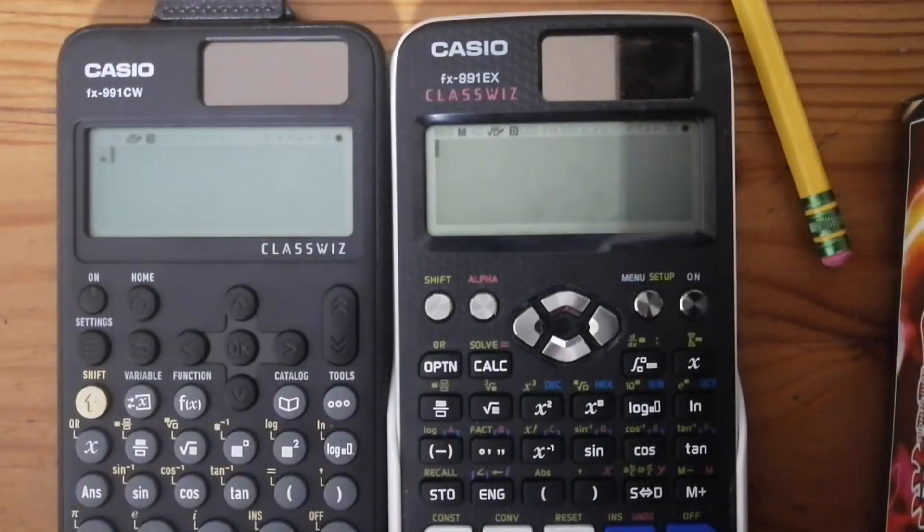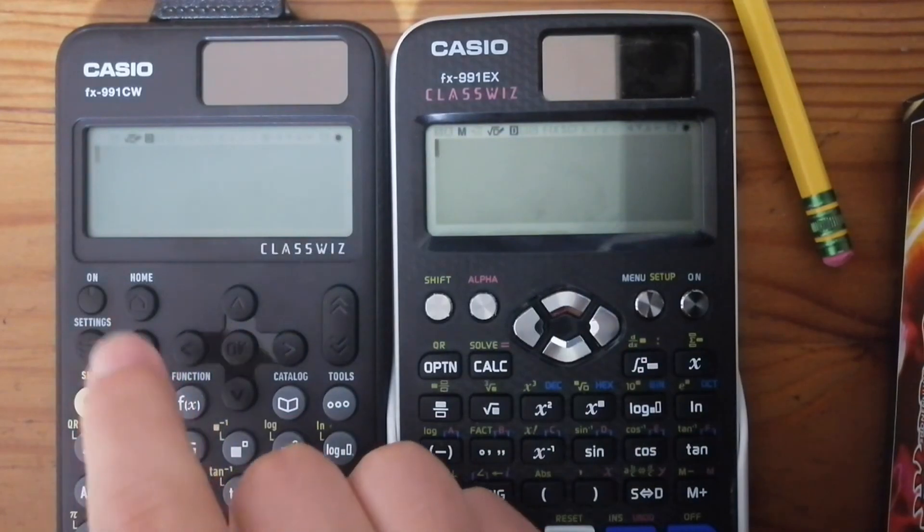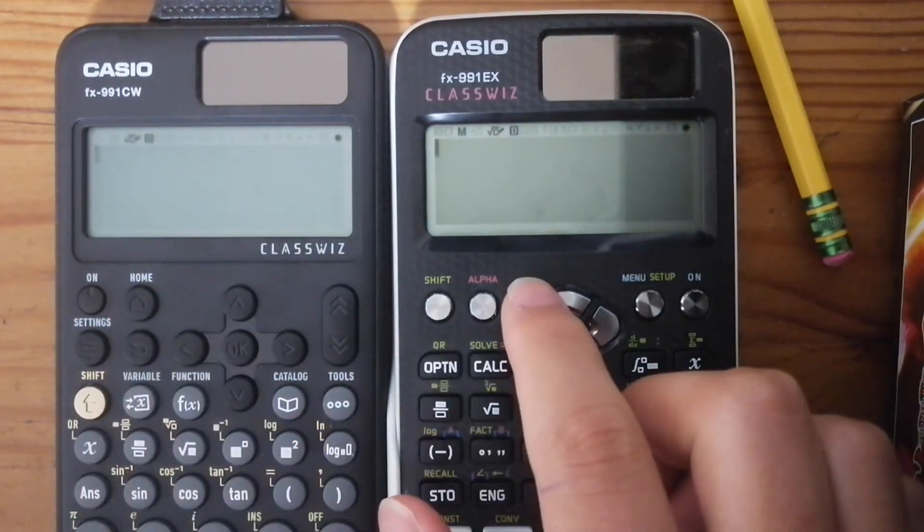All right, hello everybody. So right here I have two calculators. This one is the Casio FX991CW and this one is the FX991EX.